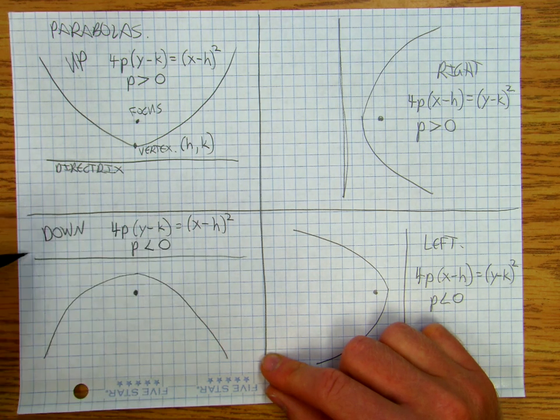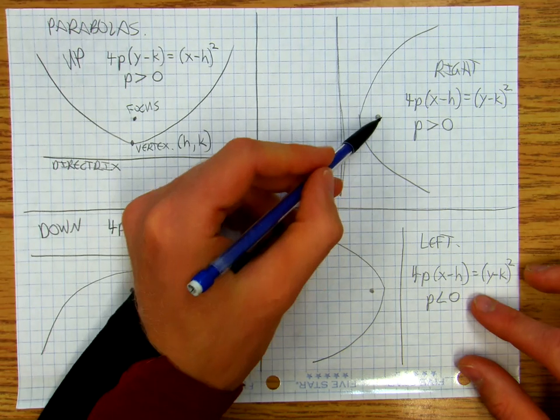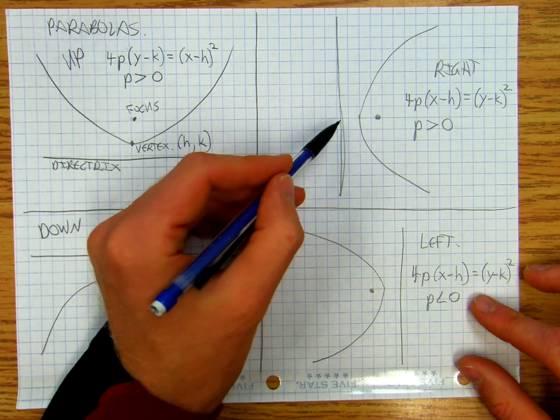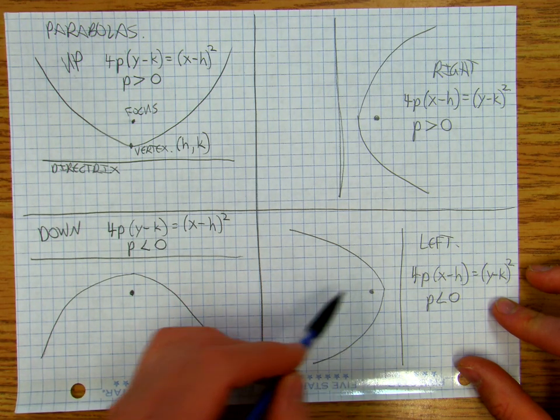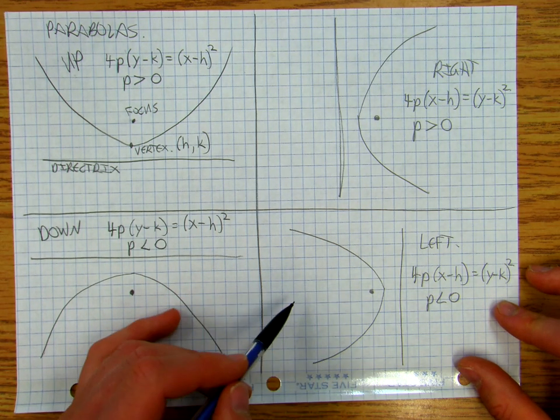If the focus is below the directrix, it opens down. If the focus is to the right of the directrix, it opens to the right. If the focus is to the left of the directrix, it opens left.